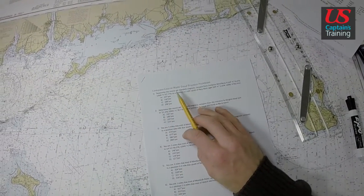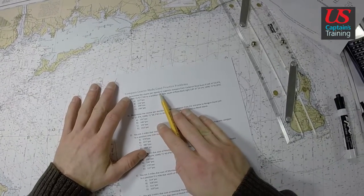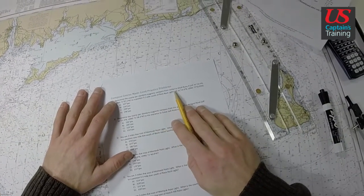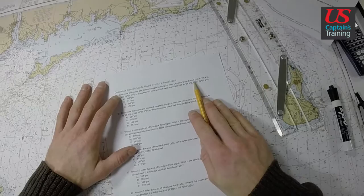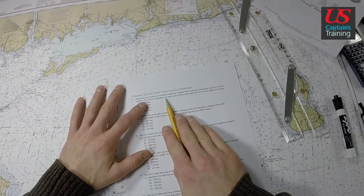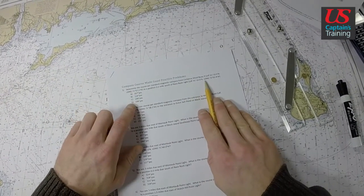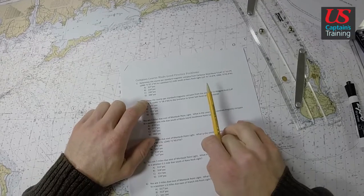Compass Course Made Good Practice Problem 1. Determine the course per Standard Magnetic Compass from Sebris Shoal Buoy 9, with approximate latitude and longitude given, to a position 0.2 miles south of Race Rock Light, with approximate latitude and longitude provided so you can find the point.